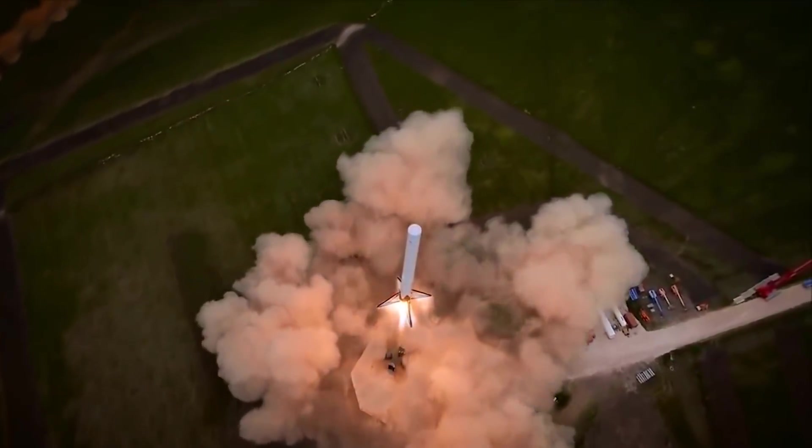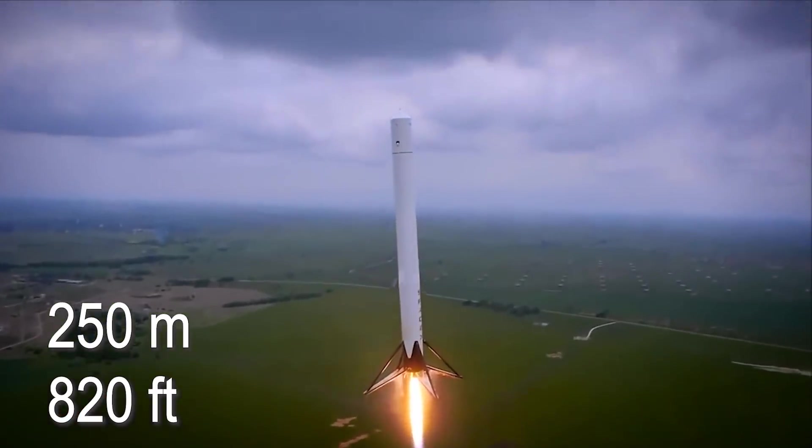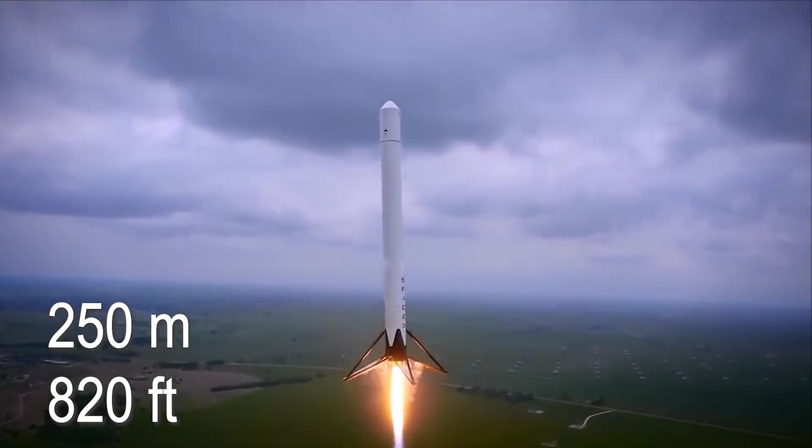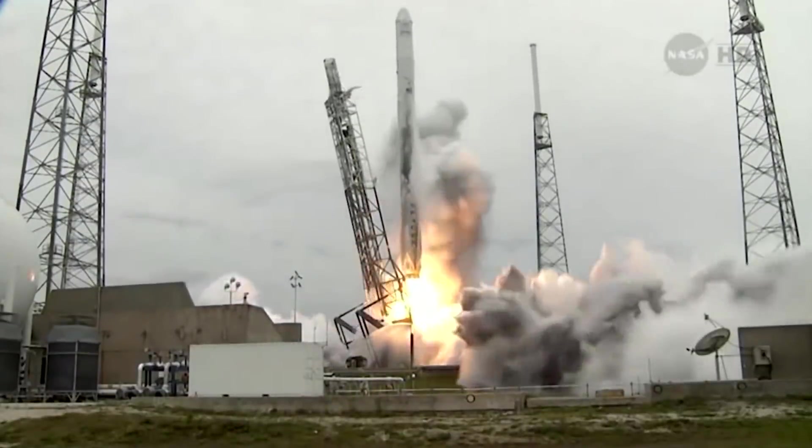So then if we fast forward 4 months, we get to the first launch of the new version of the Grasshopper rocket. This ended up reaching a maximum altitude of 250 meters, but also moved sideways and hovered at this maximum altitude, as you can see in the video. Then, the very next day, on April 18th, another attempt of a controlled landing in the ocean would occur. Again, not on a barge, but rather just in the ocean, just trying to see if they could actually successfully perform it.